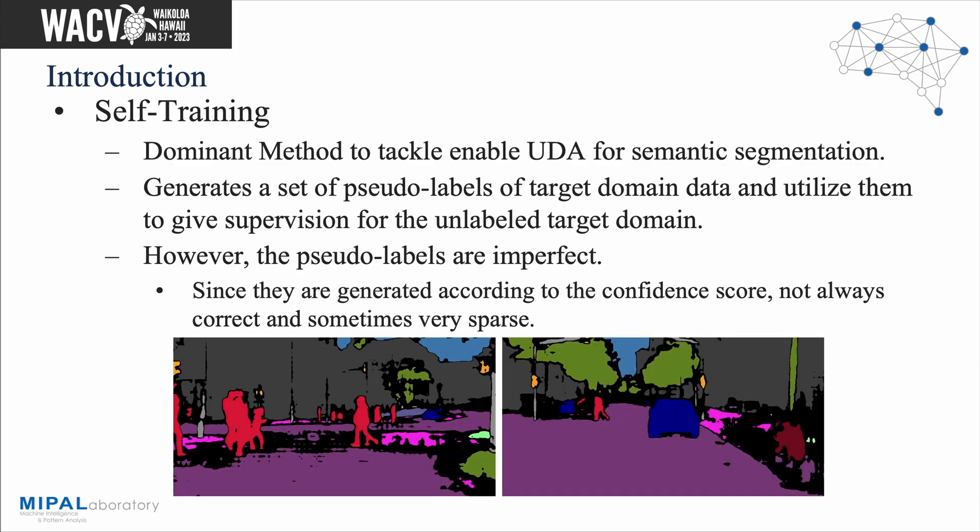A dominant and popular method in UDA is self-training, which is to generate a set of pseudo-labels and utilize them to give supervision on the target domain data. The pseudo-labels are generated using a model trained on the source domain or a naively adapted model. However, as can be seen in this figure, these pseudo-labels are not always correct and can be very sparse.